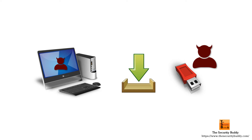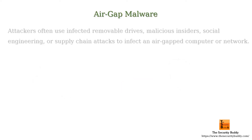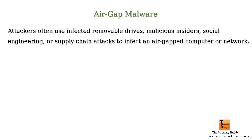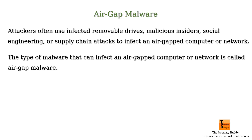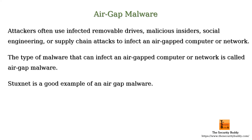In that way, attackers often use infected removable drives, malicious insiders, social engineering, or supply chain attacks to infect an air gap computer or network. This type of malware that can infect an air gap computer or network is called air gap malware. Stuxnet is a good example of an air gap malware.